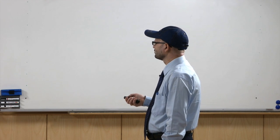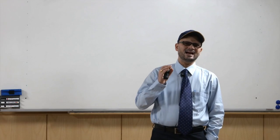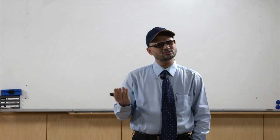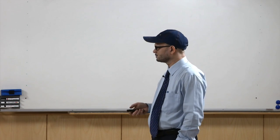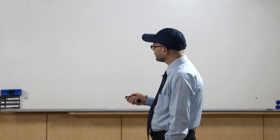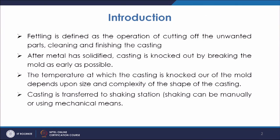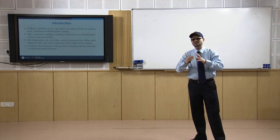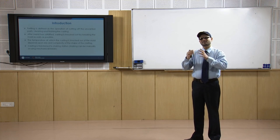Once metal has solidified, the casting will be knocked out by breaking the mold as early as possible. Since the mold is made of sand, the sand mold is broken because it is used only once. The temperature at which the casting is knocked out of the mold depends upon the size and complexity of the shape of the casting. For a plain shaped casting of larger size with not much complexity, it may vary from 900 to 1000 degrees centigrade for ferrous castings.